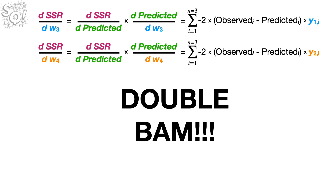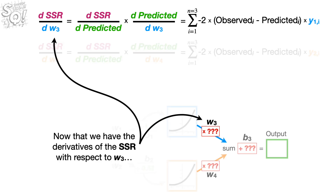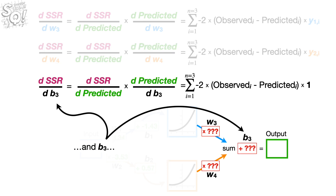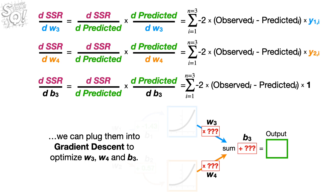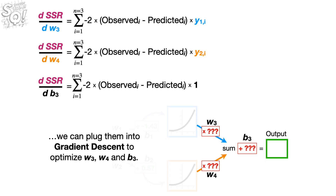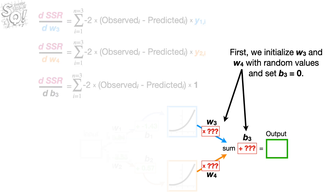Double bam! Now that we have the derivatives of the sum of the squared residuals with respect to W sub 3, W sub 4, and B sub 3, we can plug them into gradient descent to optimize all three parameters. We initialize W sub 3 and W sub 4 with random values and set B sub 3 equal to 0.